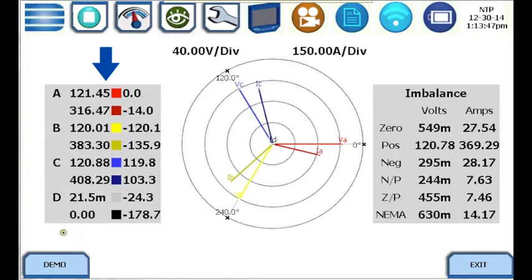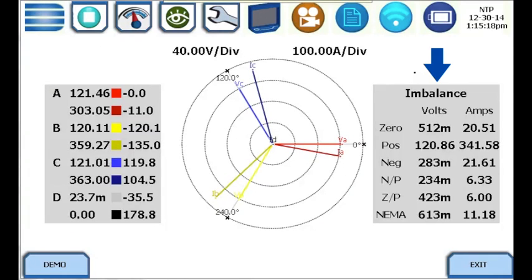The gray shaded area on the left shows the magnitude and phase of each voltage and current channel. And the gray shaded area on the right indicates imbalance information for each voltage and current channel.